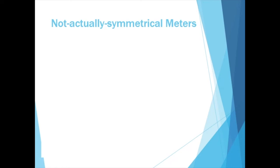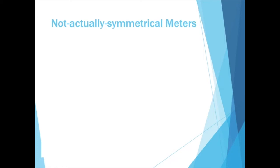Sometimes, meters that we expect to be symmetrical can be divided in asymmetrical ways. For example, although we generally assume that 9-8 consists of three dotted quarter note beats, it can also be divided into other combinations, such as in this Bartok excerpt, which has a grouping of 4 plus 2 plus 3.